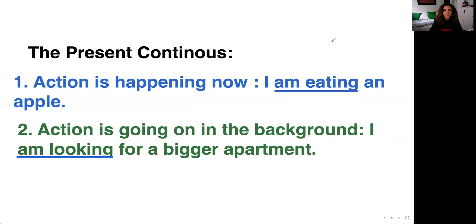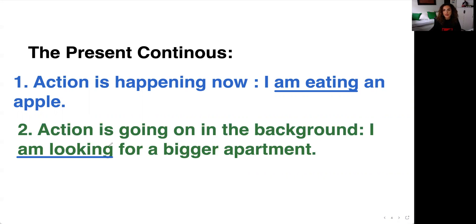The present continuous is when an action is happening now — for example, I'm eating an apple, so the action is happening right now. Also when the action is going on continuously in the background: I'm looking for a bigger apartment, I'm writing a book — so I'm not doing it right now, but it is happening in the background. Notice that with the present continuous in English, the verb uses am/is plus a participle: am eating, am searching, am looking, am writing.